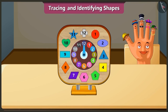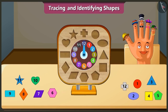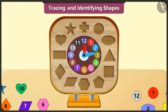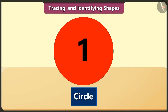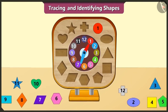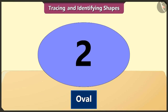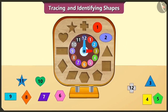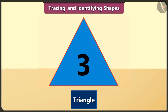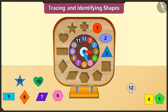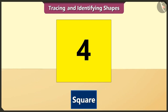Friends, look — we have a clock with blocks of different shapes, which will help us in identifying shapes. The circle is first in order. The oval is second in order — this shape is like an elongated circle, also called ellipse. The triangle is third in order; a triangle has three sides. The square is fourth in order; the length of all its four sides are the same.